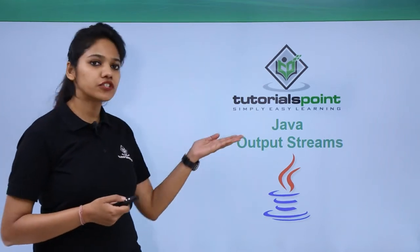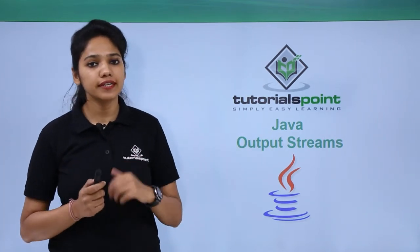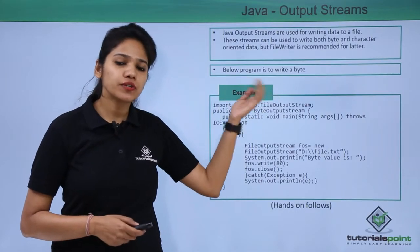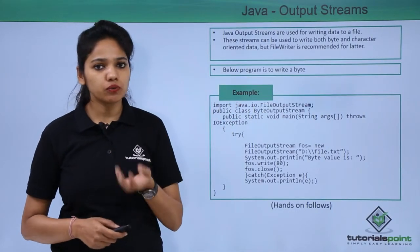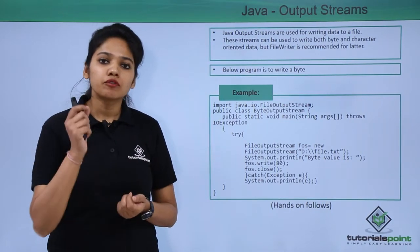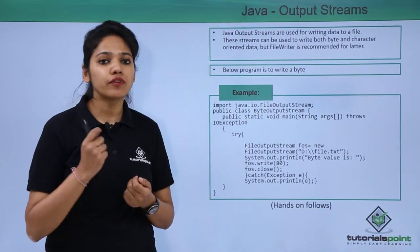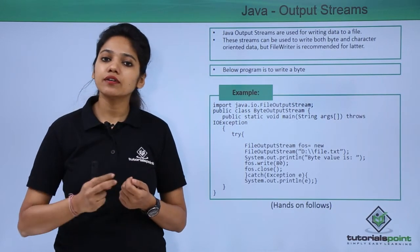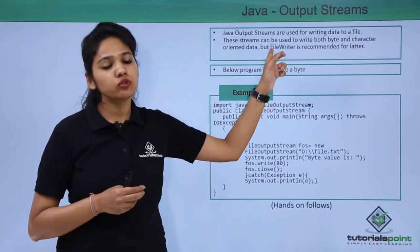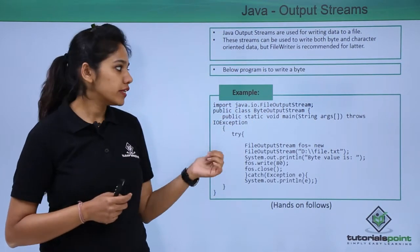Let us learn about the Java OutputStream and how you can write data to your destination file. Normally an output stream is used to write data to a file. You can write a byte type or a character type, but for character type it is recommended to use FileWriter. Although FileWriter will internally use FileOutputStream, it is always recommended to use FileWriter for your character type.